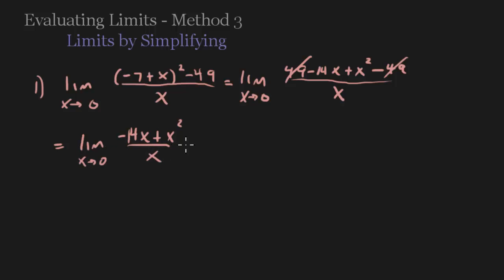Well, it's great because now I can go into method 2, which is just to factor. So I'm going to factor out an x. That's going to leave me -14 + x all over x. And now these cancel. So what's left after I cancel the x's is just -14 + x. And since 0 is in the domain of -14 + x, I can then just plug in 0. And I get -14.